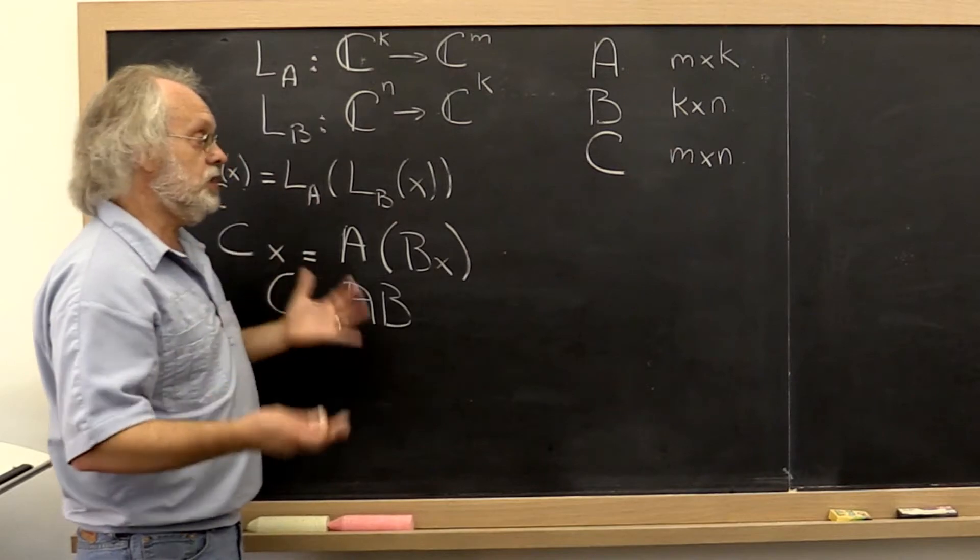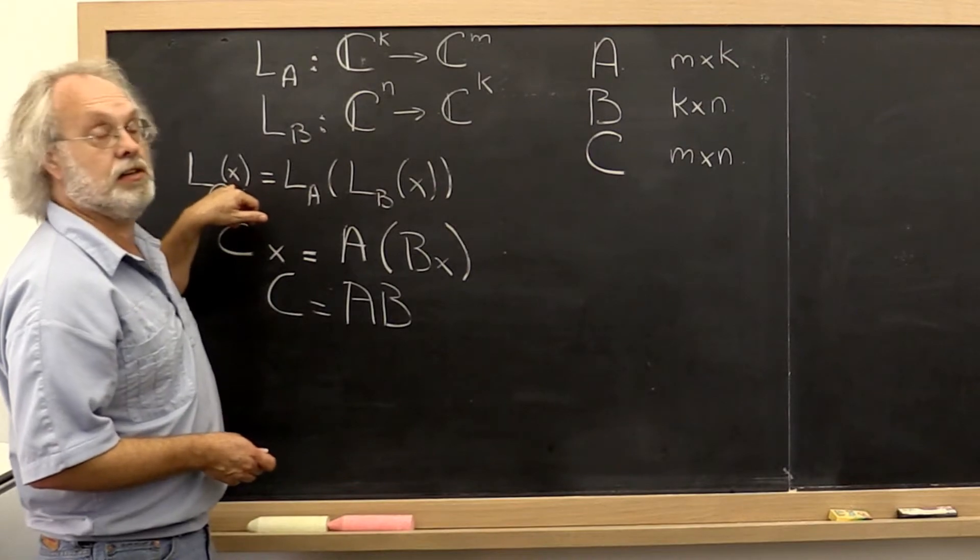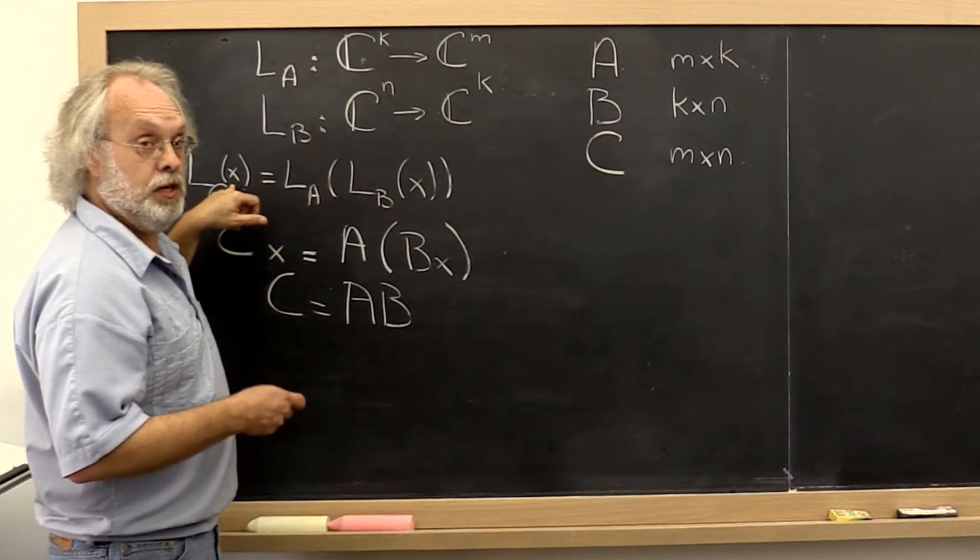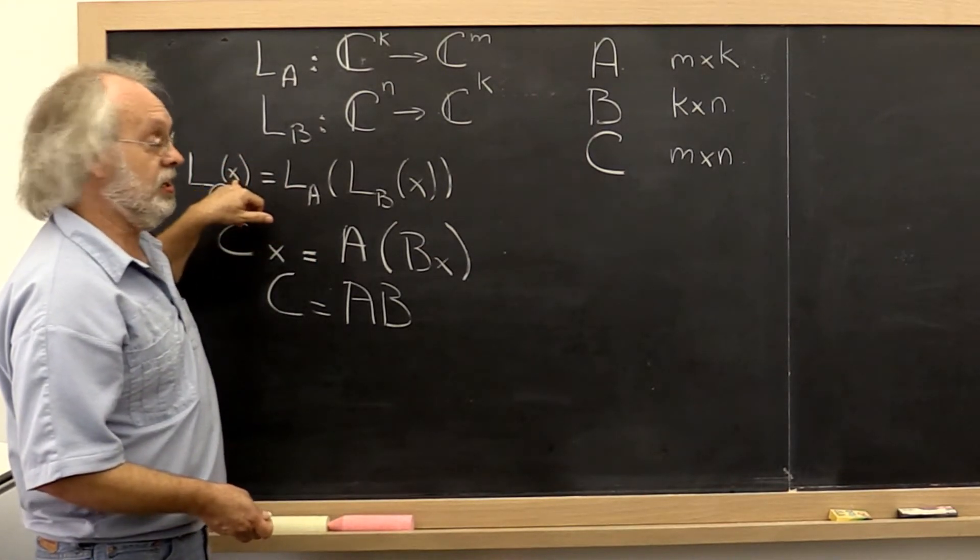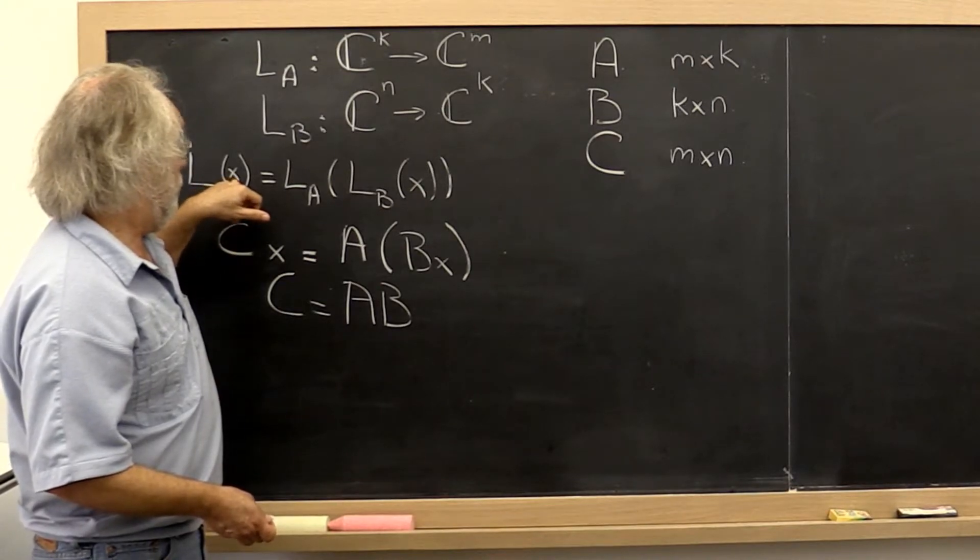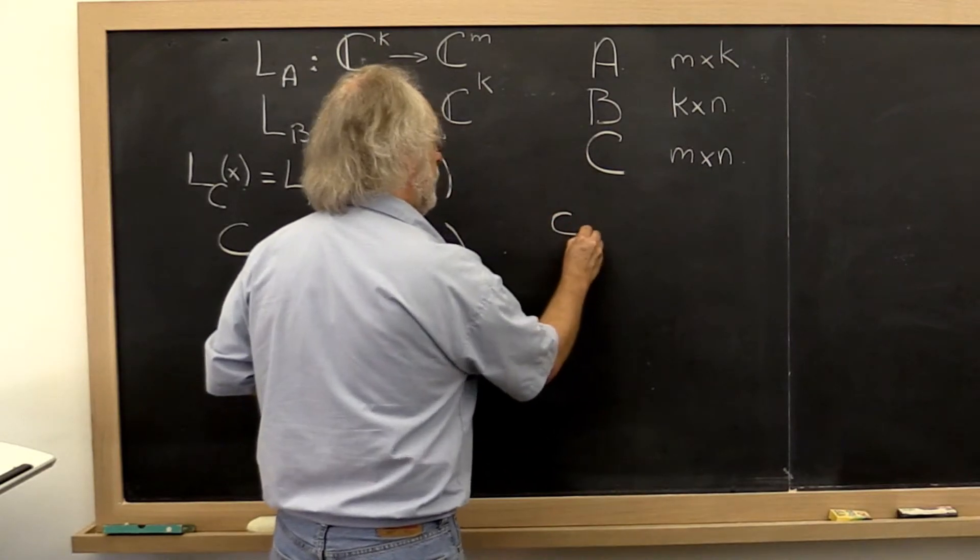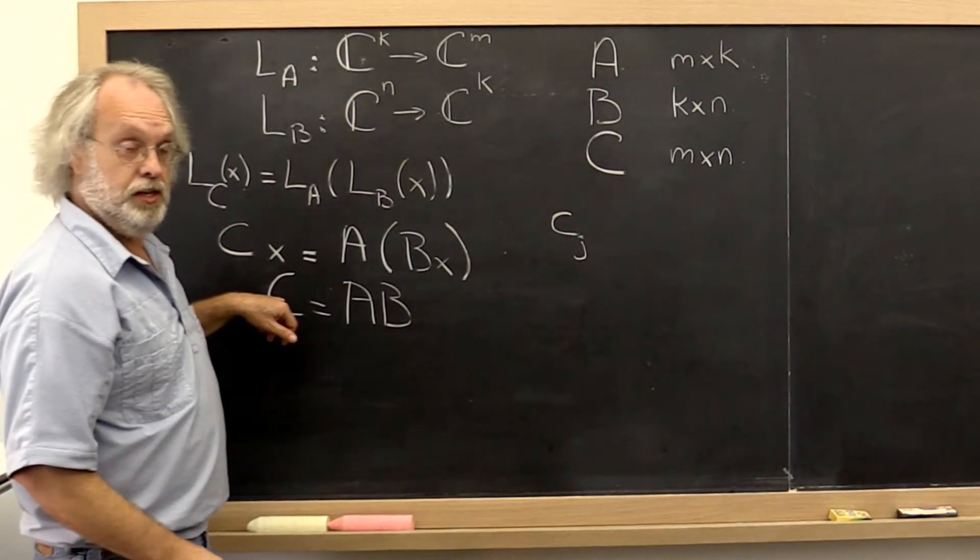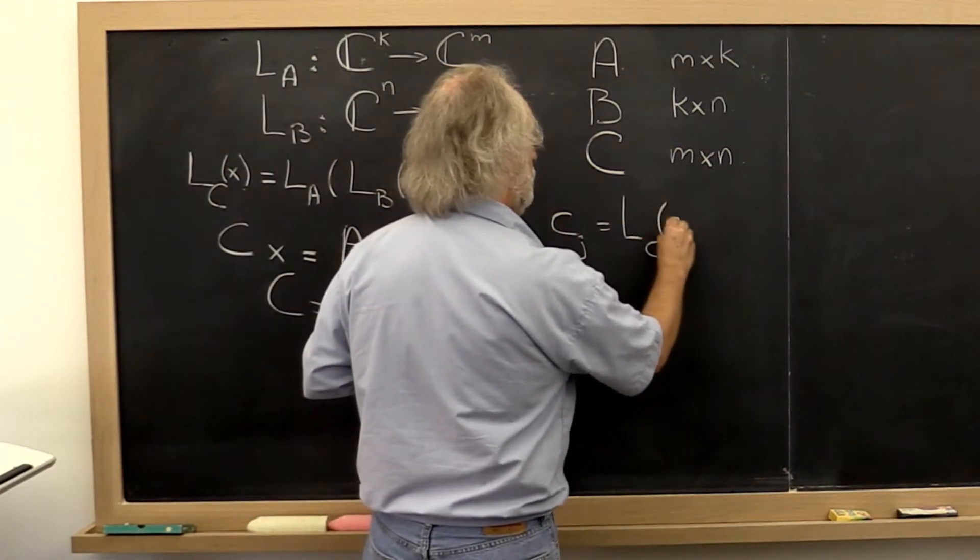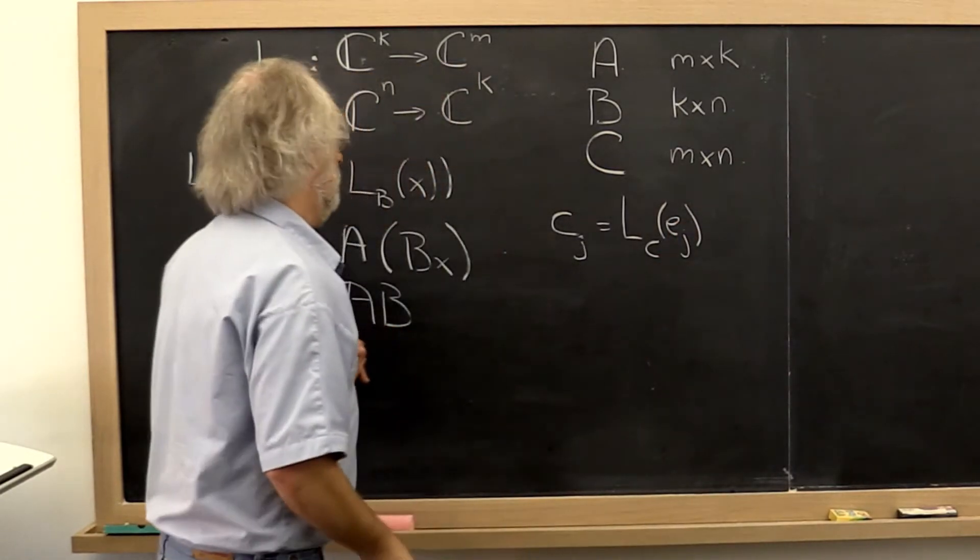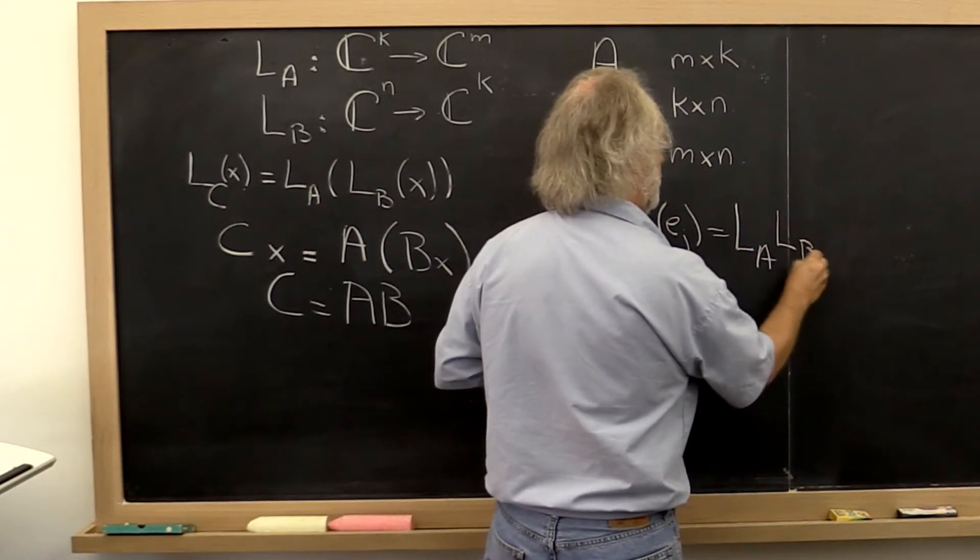Now what did we just learn? We just learned that the columns of the matrix that represents a linear transformation can be created, can be computed, by plugging in the standard basis vectors. So the jth column of matrix C should be equal to L_C applied to the jth standard basis vector, which then is equal to the composition of these two.